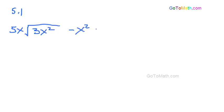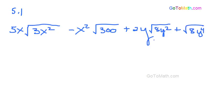x squared square root of 300 plus 2y. That y got a little out of hand, didn't it? And then 8y squared and then plus the square root of 8y to the fourth. Okay.